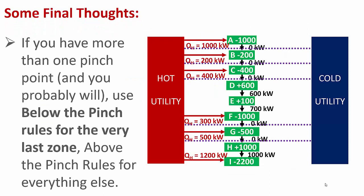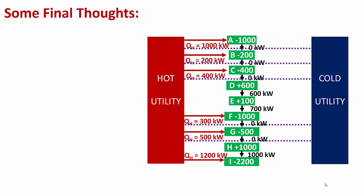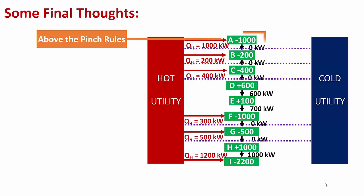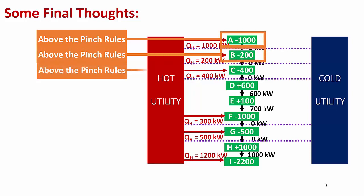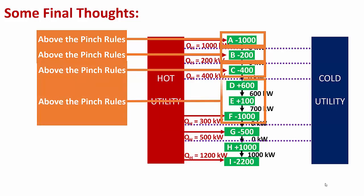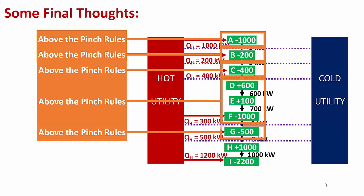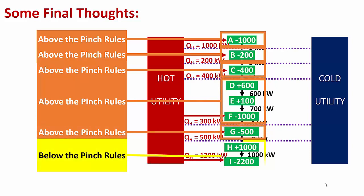A very common question is: what do you do when you have more than one pinch point? If you have more than one pinch point — and you probably will — use below-the-pinch rules for the very last zone and above-the-pinch rules for everything else. For example, in the cascade diagram from the previous lecture, use above-the-pinch rules for every zone except the very bottom one. If you do not follow this, your results will not make sense.